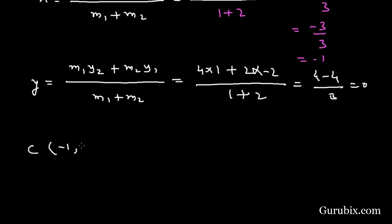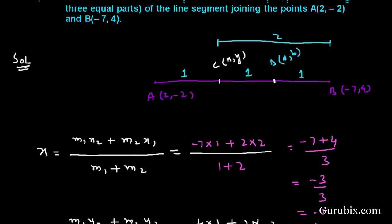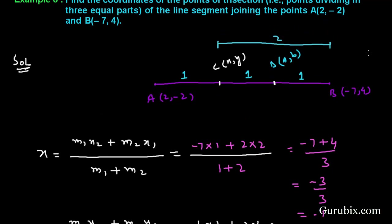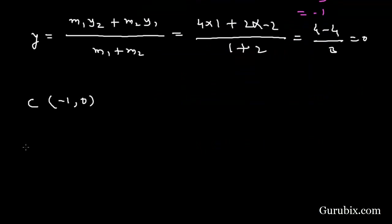Now we shall find the coordinates of point D. For point D, M1 equals 2 and M2 equals 1. We apply the section formula to find the x-coordinate of D.